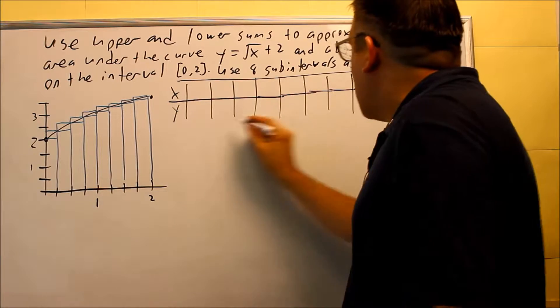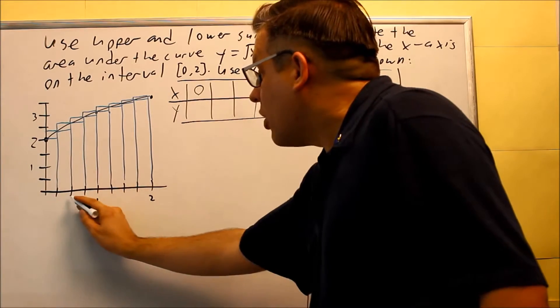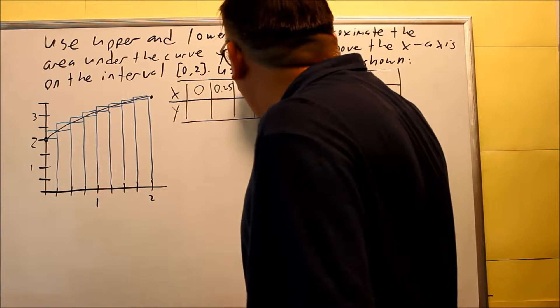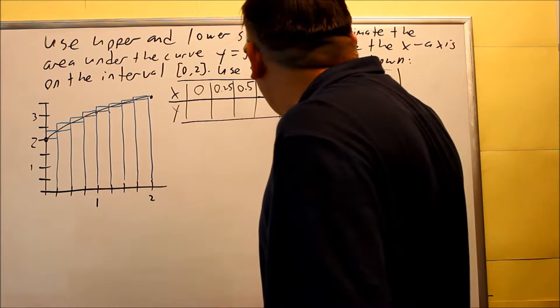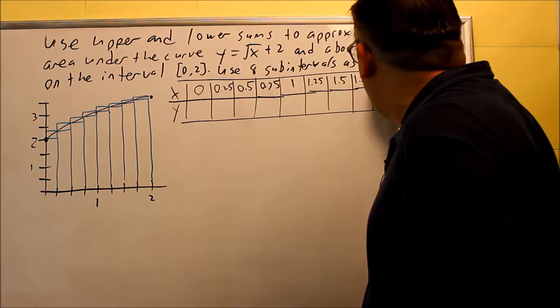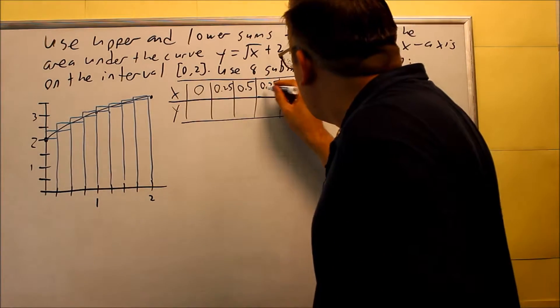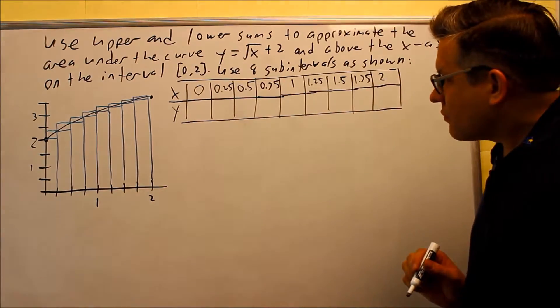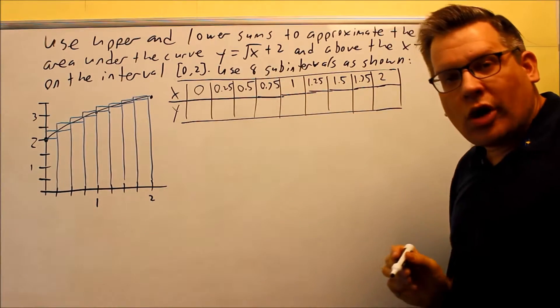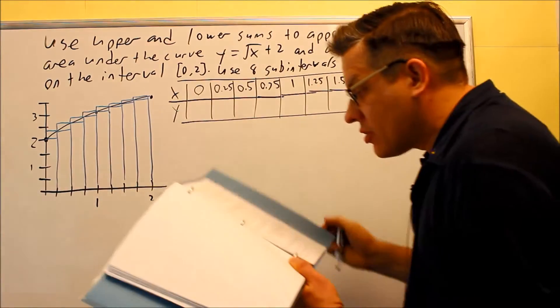So I have all of my 9 different spaces for the x values. I'm starting with 0, and I'm just adding 0.25 all the way across: 0.25, 0.5, 0.75, 1, 1.25, 1.5, 1.75, and 2. So that would be all of my x values. Now, to get the y values, you probably want to use a calculator. You can put this in as y1, and you can just generate all these y values.